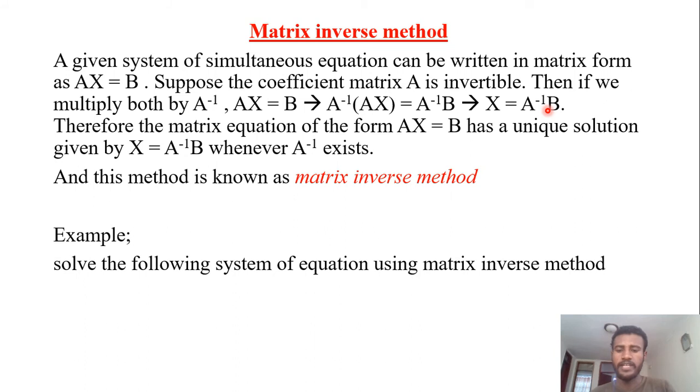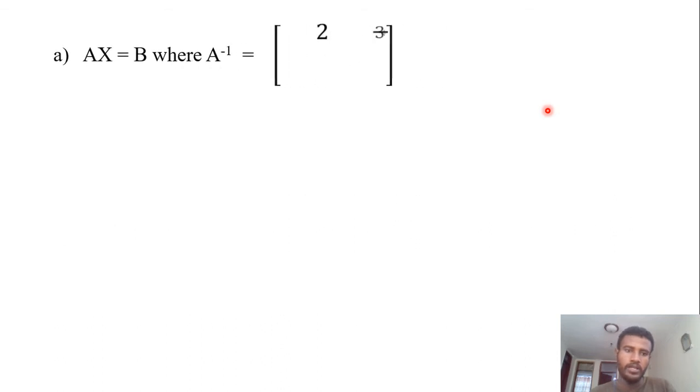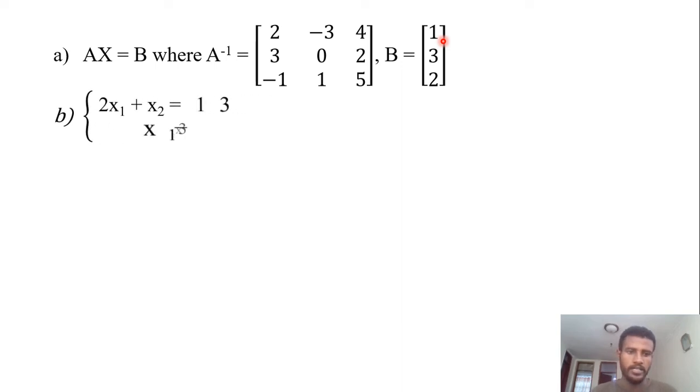Look, it is given us AX = B where A inverse is [2, -3, 4; 3, 0, 2; -1, 1, 5] and matrix B is [1; 3; 2]. So how to find the value of X?